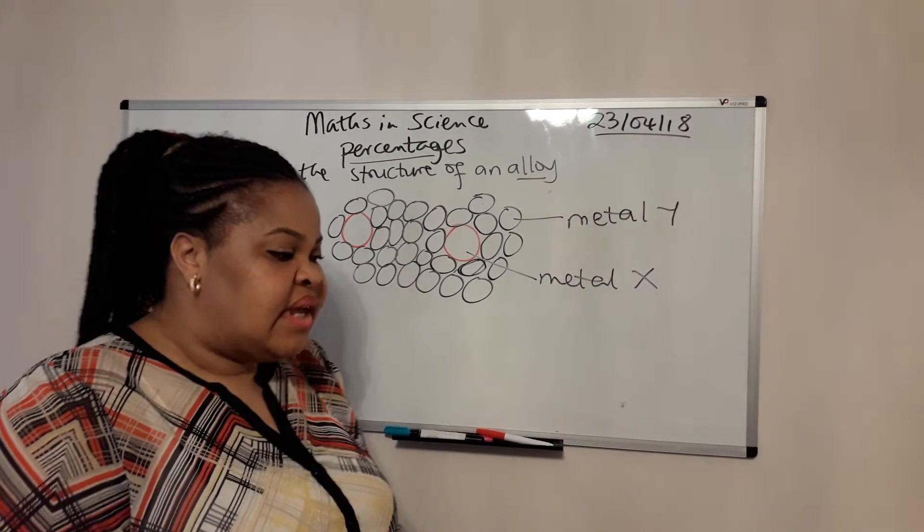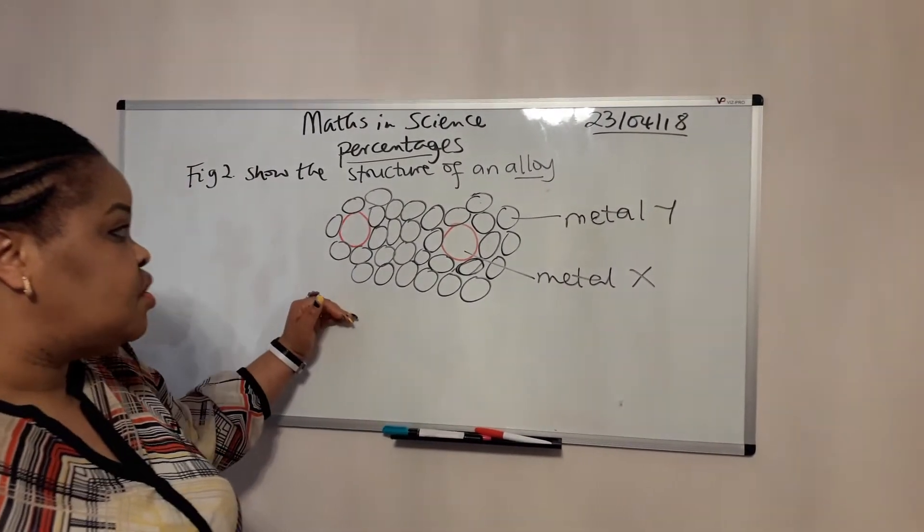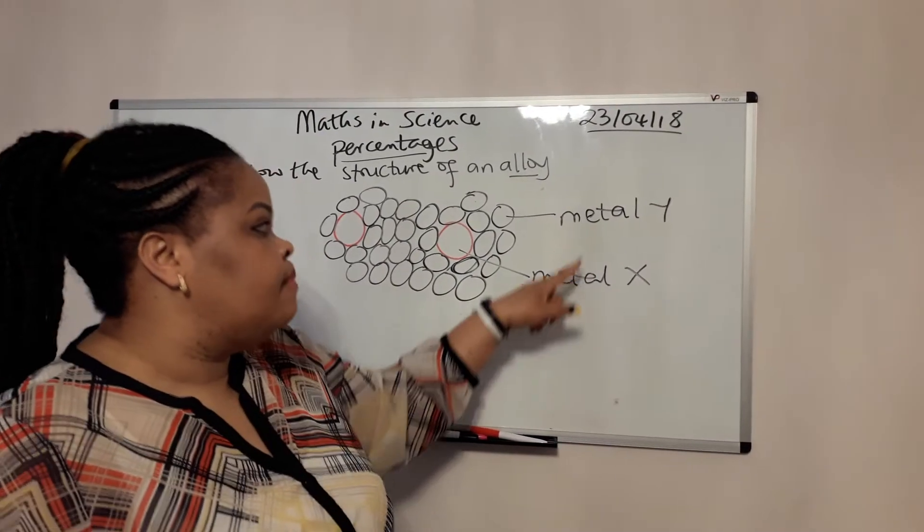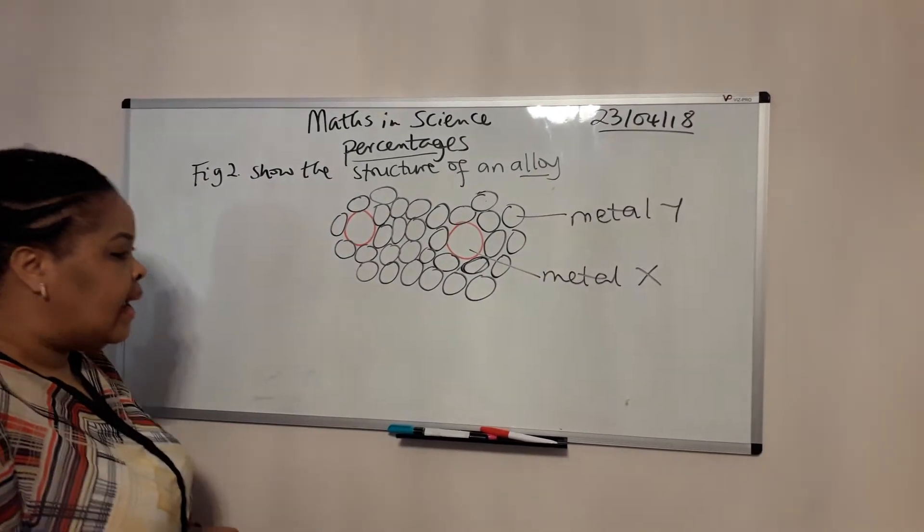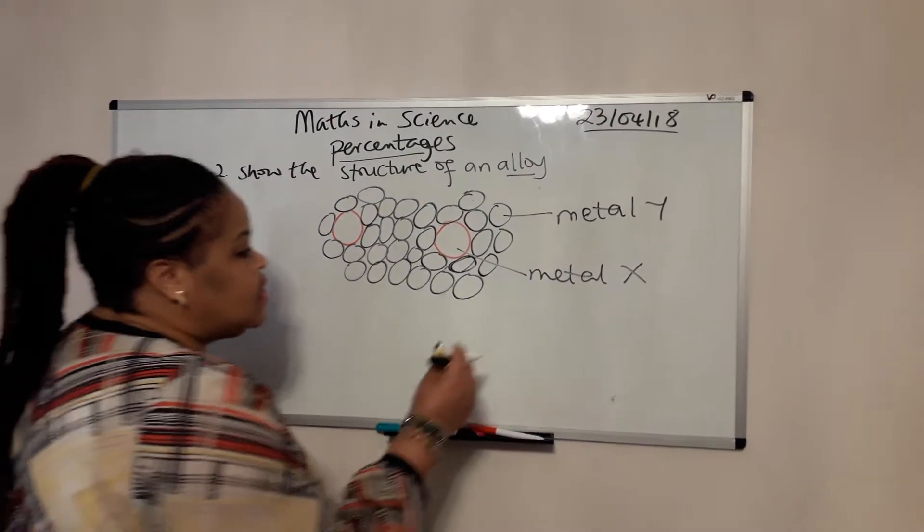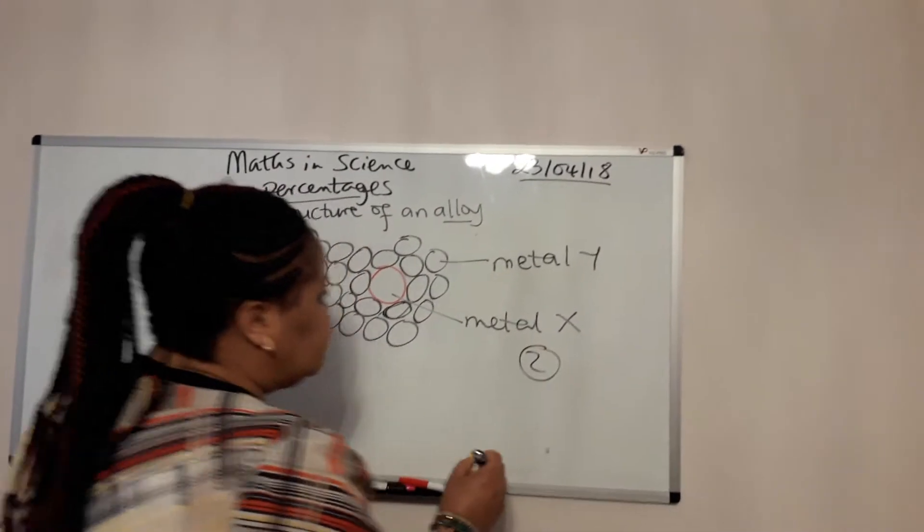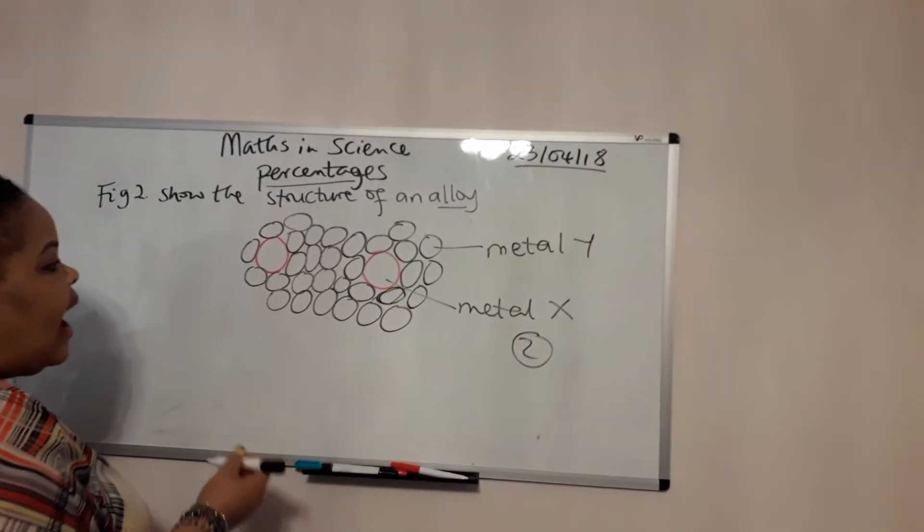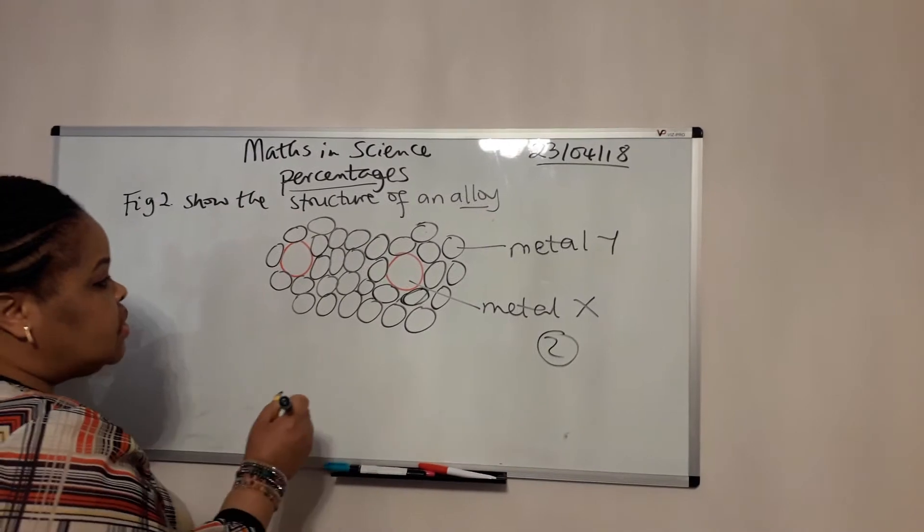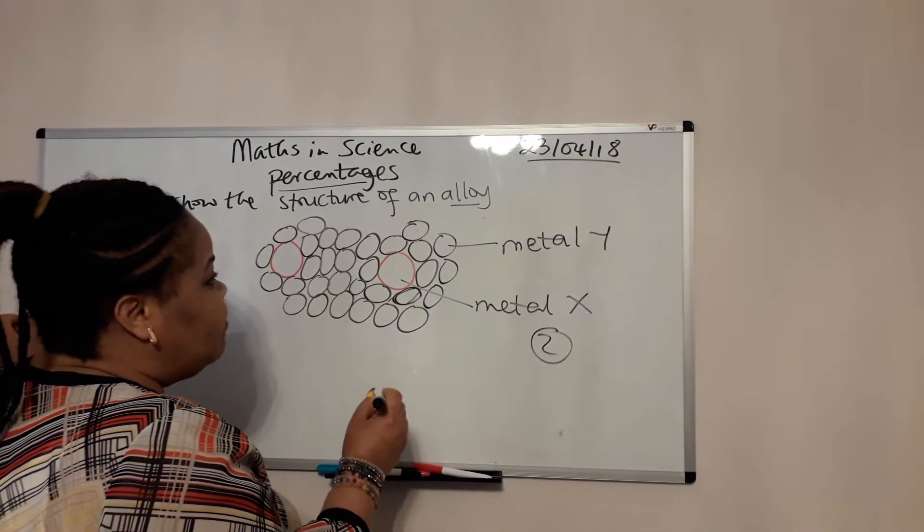On the other section of the question it says, what percentage of metal X is in metal Y? Now what you have to do: metal X, they have only two atoms, these two red ones, and then you have to carefully count how many of the Y that you have on the paper, which is 25 of them.